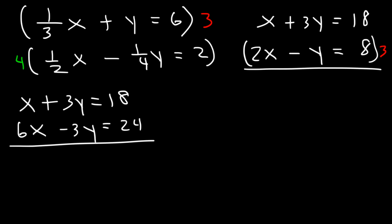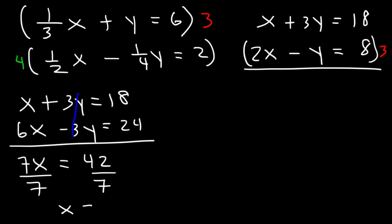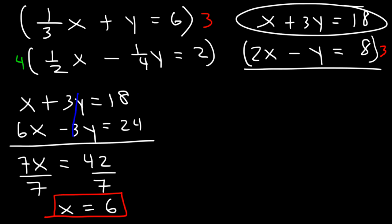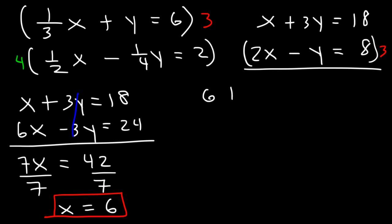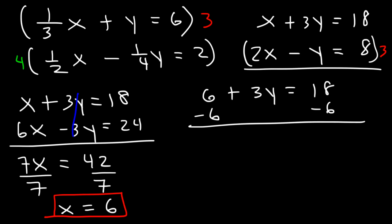If we add them, we can see that the y variables will cancel. x plus 6x is 7x, and 18 plus 24 is 42. And 42 divided by 7 is 6. Now that we have the value of x, let's find y. Using this equation: 6 plus 3y equals 18. Let's subtract both sides by 6 — 18 minus 6 is 12. And 12 divided by 3 is 4, so y equals 4.